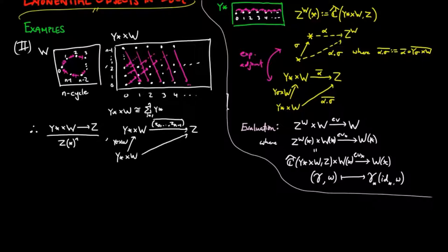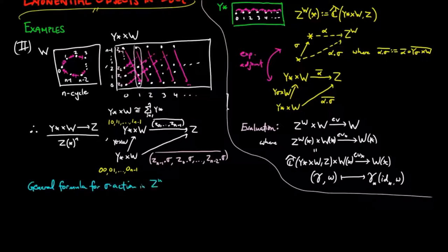So sigma acts on a figure Z0 to Zn-1 in the exponential by taking it to Zn-1 dot sigma, Z0 dot sigma, Z1 dot sigma, and so on, to Zn-2 dot sigma. So we now have a general formula for the sigma action in Z to the W when W is an n-cycle.